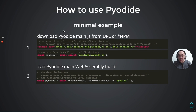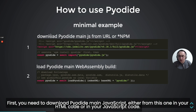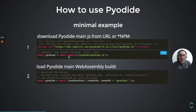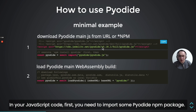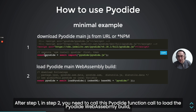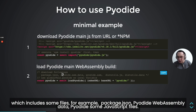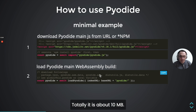How to use PyDai? This is a very basic example. First, you need to download PyDai as a JavaScript file, either from the CDN in your HTML code or in your JavaScript code. In your JavaScript code, you first import the PyDai NPM package. Then in step two, you call the loadPyodide function to load the PyDai main runtime build, which includes some files — for example, package.json, PyDai stdlib data, and some JavaScript files — totally about 10 megabytes.